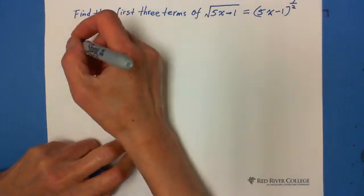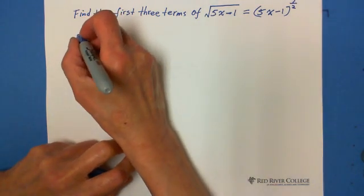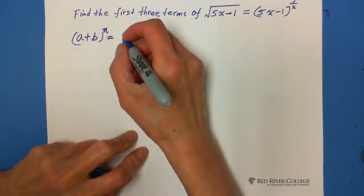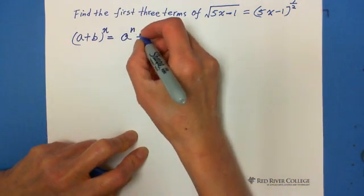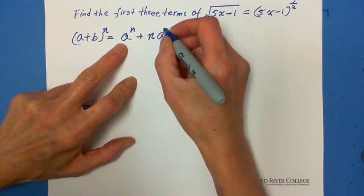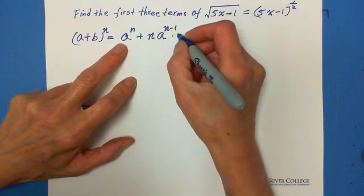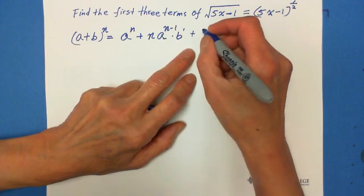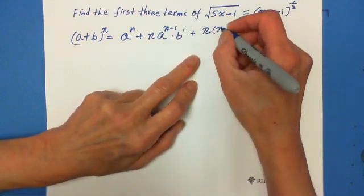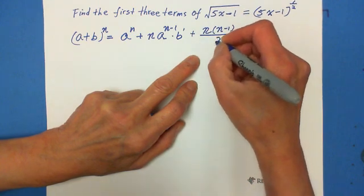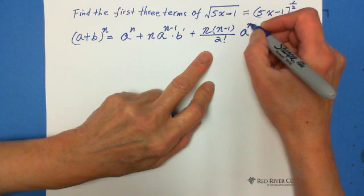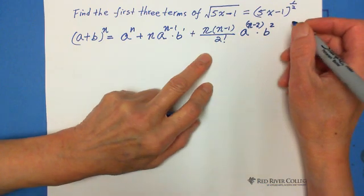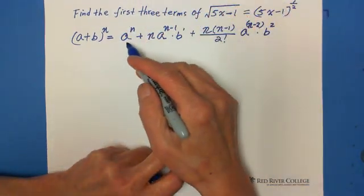Follow the formula. The formula is: (a plus b) to the n equals a to the n, plus n times a to the (n minus 1) times b to the 1 exponent, plus n times (n minus 1) over 2 factorial, times a to the (n minus 2) times b squared. Because we're only looking for the first three terms, this is what we need — three terms.